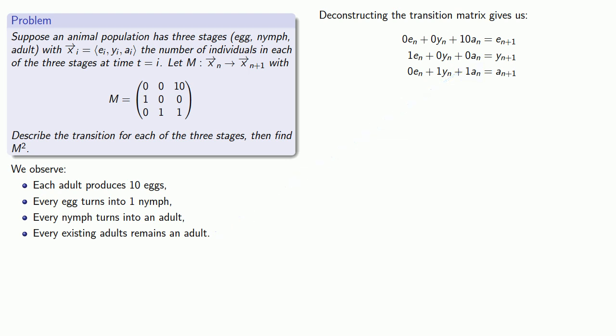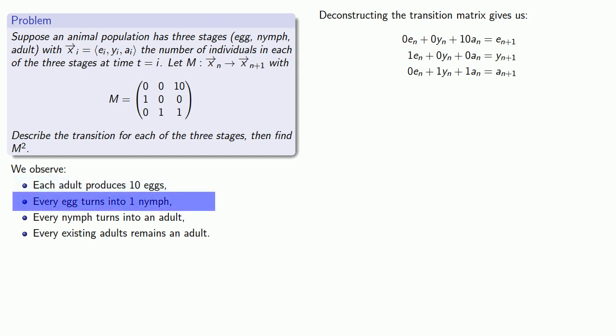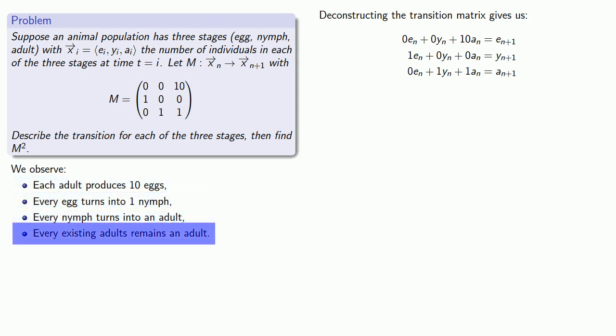Our Leslie transition matrix describes an animal whose life cycle can be summarized as: every adult produces 10 eggs, every egg turns into a nymph, every nymph turns into an adult, and every existing adult remains an adult. Biologically speaking, this isn't realistic — we can expect some attrition among the eggs, not every nymph will survive, and adults die or get eaten. But it's a starting point.